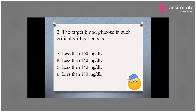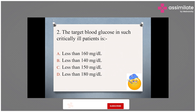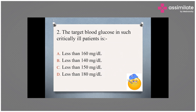In any critically ill patient, when you start insulin therapy, the ideal target blood glucose level should be less than 180 mg/dL — so D is the right answer. Once insulin therapy is started, the target blood glucose should range between 140 to 180 mg/dL. For non-critically ill patients or recovered critically ill patients, we target blood glucose less than 140 mg/dL fasting or pre-meal, and less than 180 mg/dL post-meal.